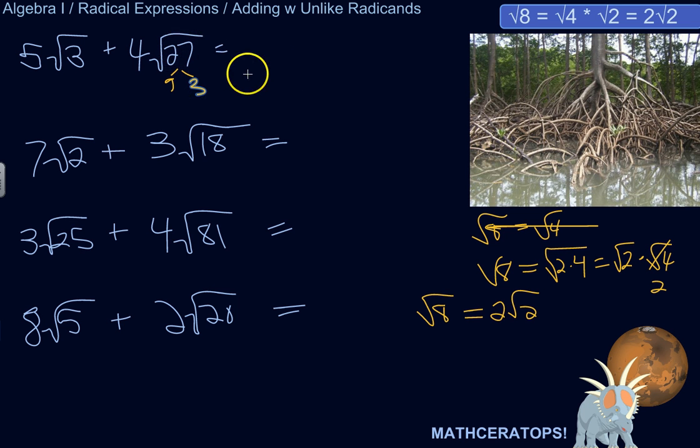So I can rewrite this as the square root of 9 times the square root of 3. Well, the square root of 9 is 3. So really, this radical expression can be written as 4 times 3 times the square root of 3. 4 times 3 is 12. So really, it's 12 times the square root of 3. So now I'm adding 5 square root of 3 plus 12 square root of 3. Now we've got like radicands. So everybody's happy. Life can go on. So 5 plus 12 is 17, and then square root of 3.